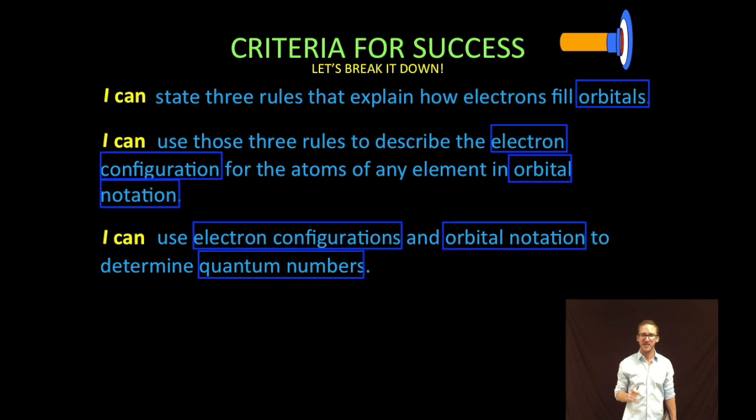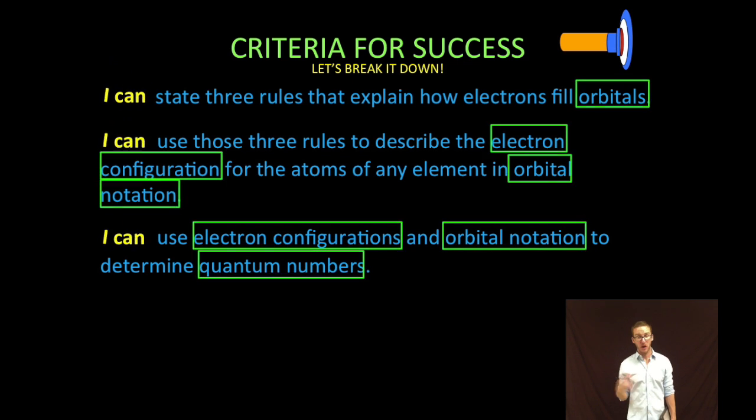First thing we're gonna do is state three rules that explain how electrons fill orbitals. We are going to use those three rules to describe the electron configuration for the atoms of any element in orbital notation. And then finally, we'll use electron configurations written in orbital notation to determine quantum numbers.